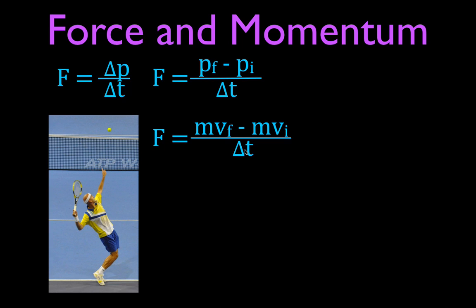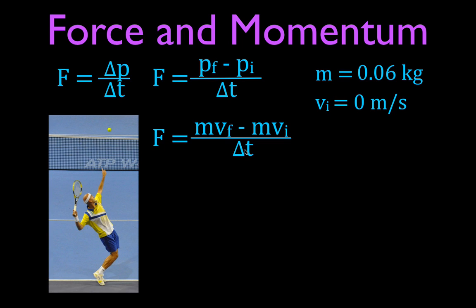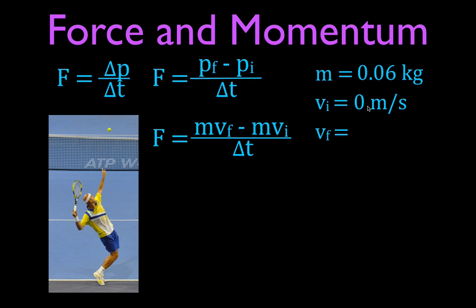When we serve a tennis ball, the ball has a mass of about 60 grams, which converts to 0.06 kilograms. The initial horizontal velocity is 0, because the player throws the ball straight up. The final velocity of a fast serve is about 120 miles per hour, which converts to 55 meters per second. The mass must be in kilograms and velocity in meters per second. The racket is in contact with the ball for about 3 thousandths of a second — 0.003 seconds.